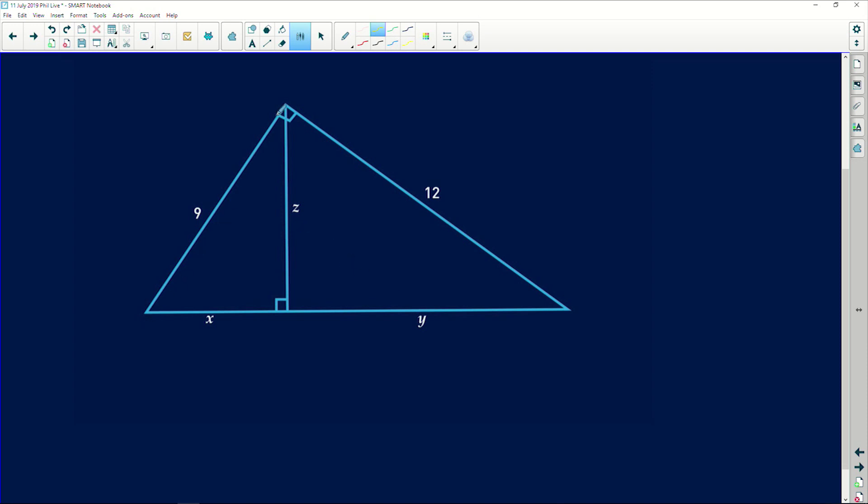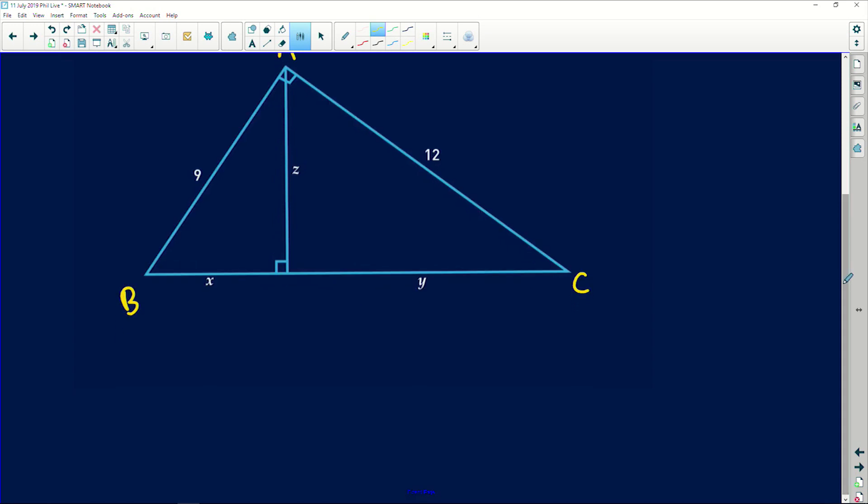But if we look at this big triangle over here, we can see that this whole length here, let me label A, B, C. The whole length BC is given to us as x plus y. So we can already find an expression for x plus y because remember BC squared is equal to AB squared plus AC squared because of Pythagoras.